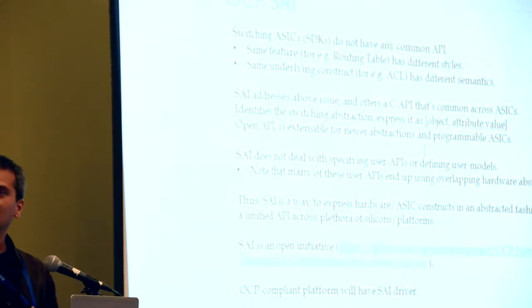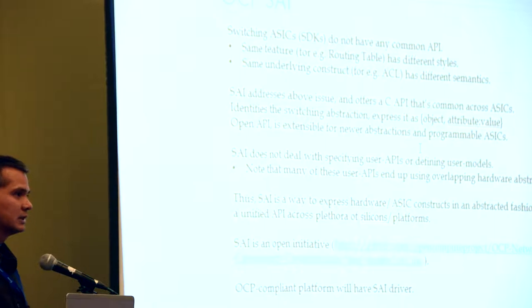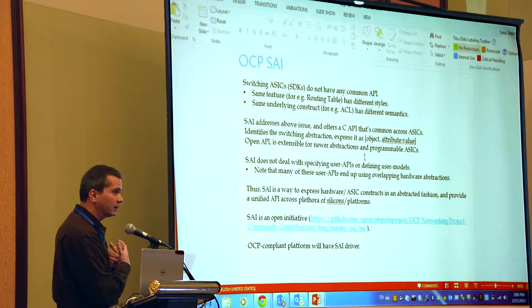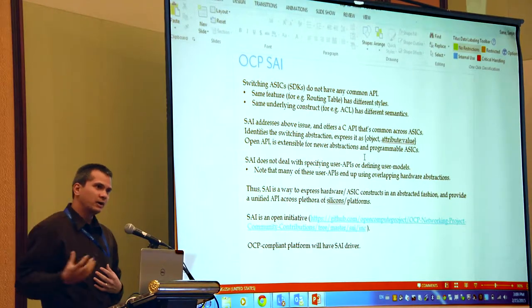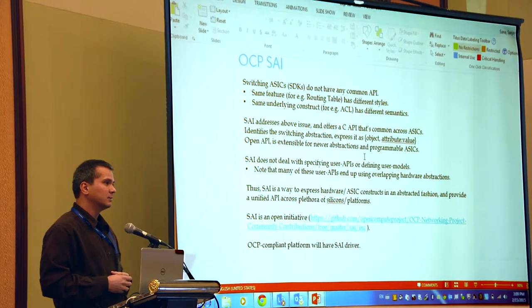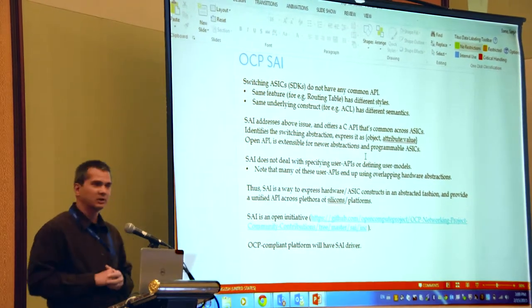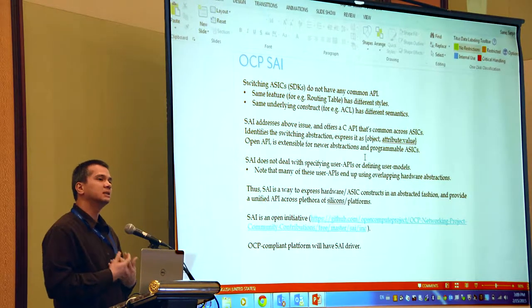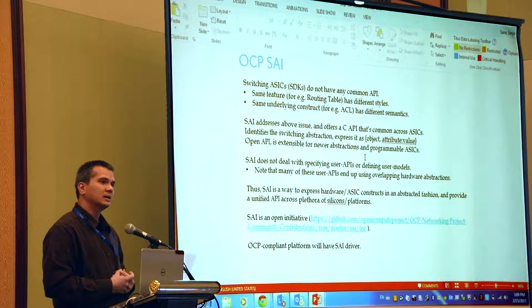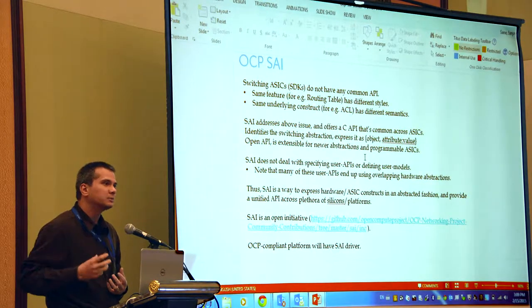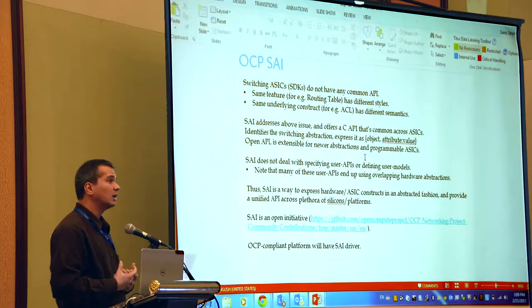Instead of looking from top to down — which is how a user in the Linux land will try to look at a forwarding construct and then try to offload it — we kind of went the other way. There are already networking switches out there, already so many networking operating systems which try to do stuff. So why not take a look at the existing SDKs and existing switches, existing platforms, and try to build abstraction as to what a switch can do, what hardware can do.